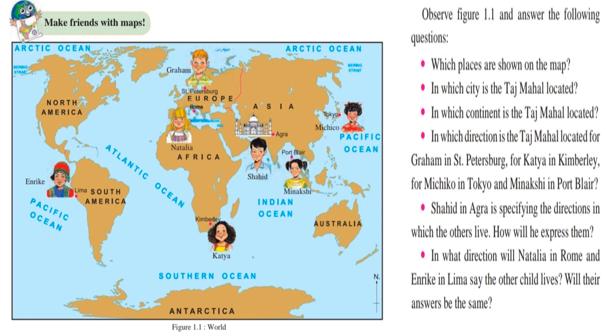Now, the fourth question is in which direction is Taj Mahal located for Graham in St. Petersburg, for Cartier in Kimberley, for Michiko in Tokyo and Meenakshi in Port Blair. What will be the direction of Taj Mahal? What will be the direction of Taj Mahal for these children located in different parts of the world?